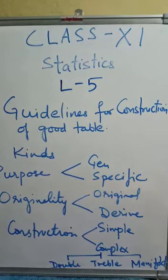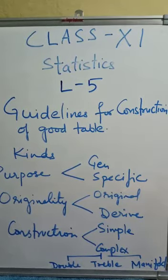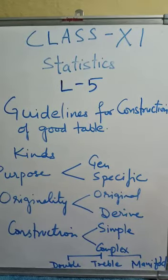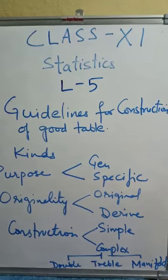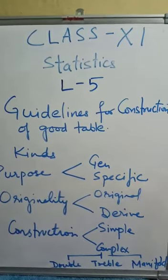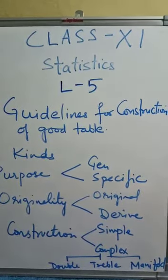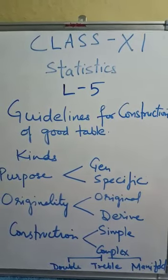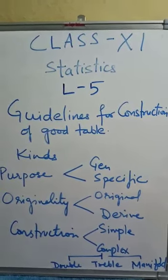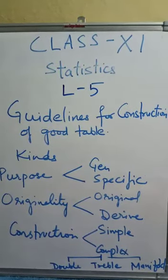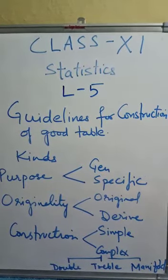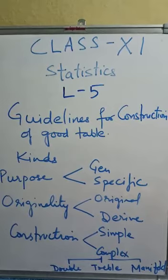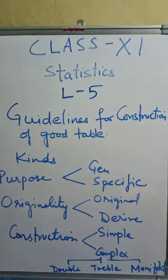Ideal size, stubs, use of zero, headings, abbreviations, footnotes, units, total, percentage and ratio, extent of approximation, source of data, size of columns, rulings of columns, simple, economical and attractive.